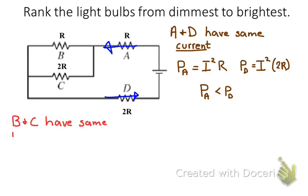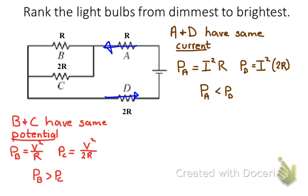You might also notice that bulbs B and C have the same potential. They're in parallel with each other. So you might compare those two using the V squared over R version of the equation. And so if you divide by a bigger resistance, you would get less power. So you can use that logic to determine that bulb B is brighter than bulb C.